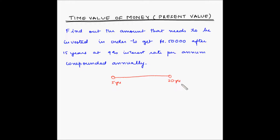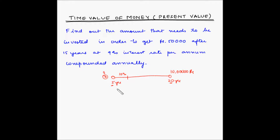You have a specific goal in mind — you want 10 lakh rupees at the end of 20 years, and you know that a bank gives 10% interest per annum. So you want to find out how much money you should invest currently to get 10 lakh rupees at the end of 15 years. When the child is 20 years old, the tenure of your investment will be 15 years because you are starting the investment when your child is 5 years old. So this 10 lakh is the future value, whereas the investment you have to determine is the present value.